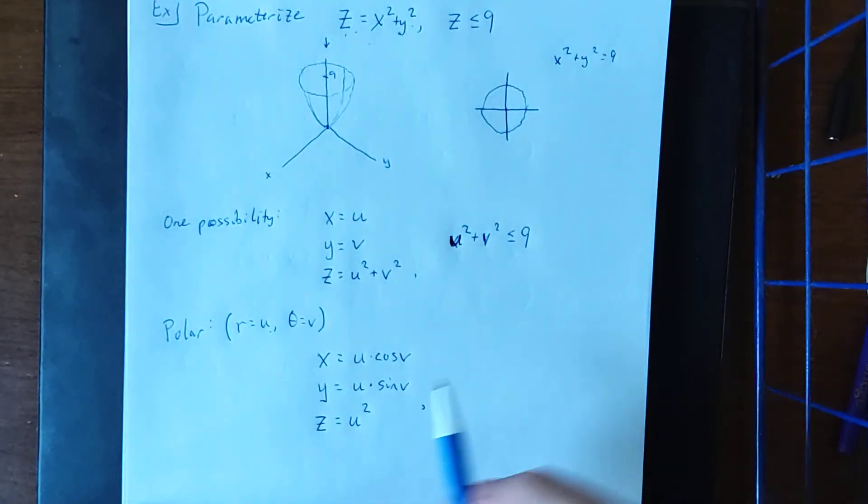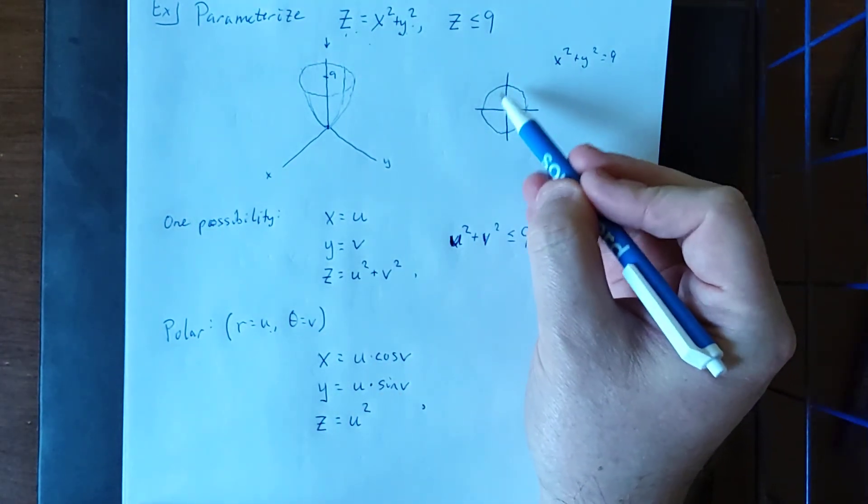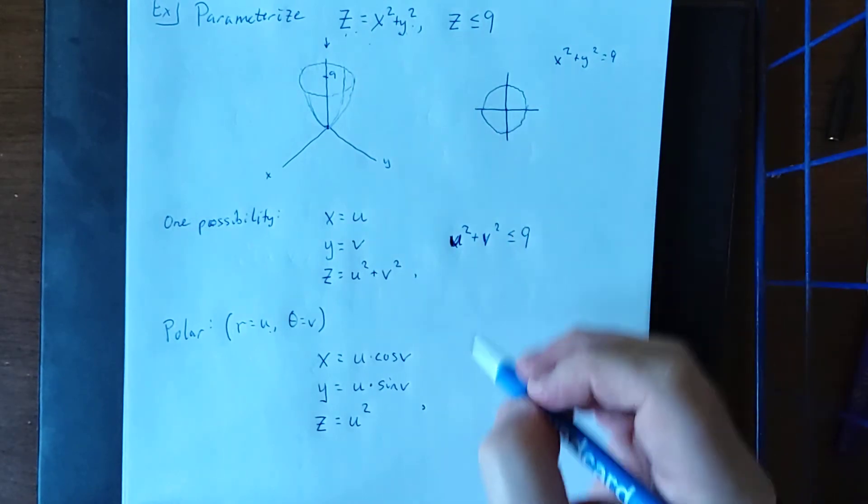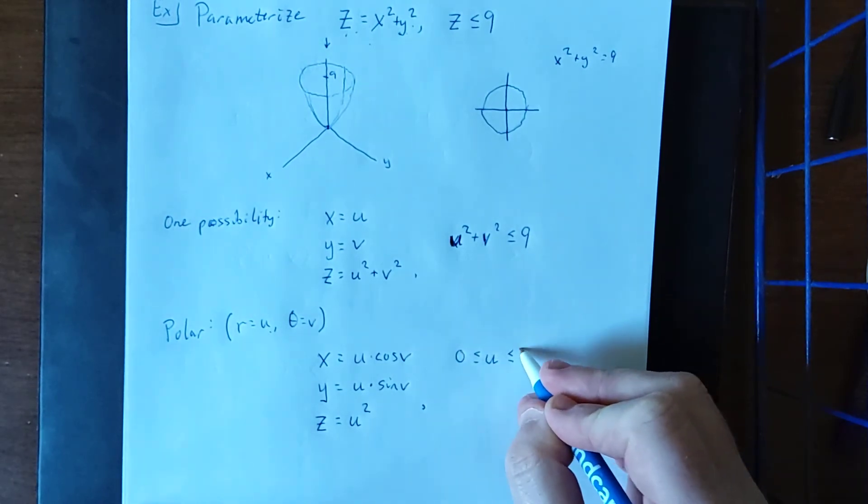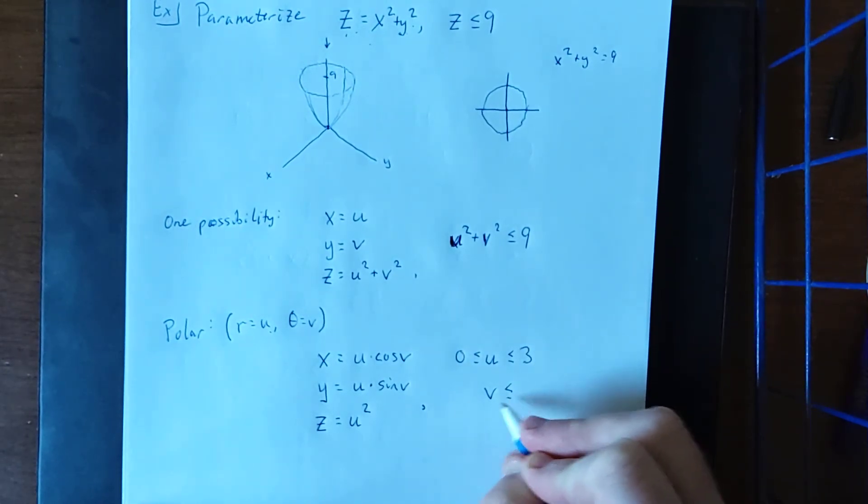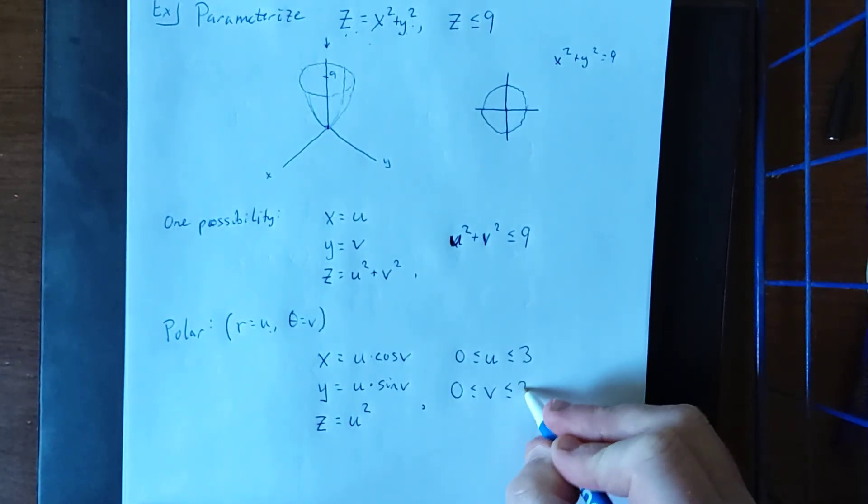Now in this regard, since we've already made a conversion into polar, we need to consider what this xy trace would look like in polar coordinates. So u would be between 0 and 3, and v we would want one full rotation on the unit circle.